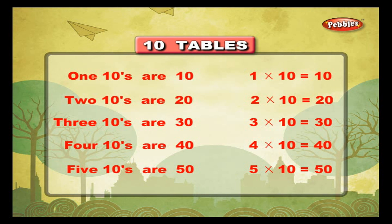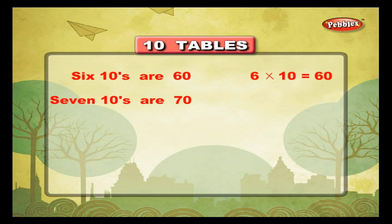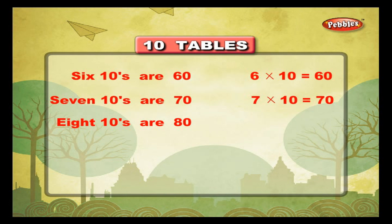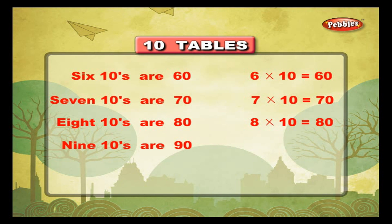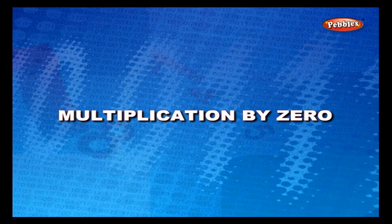6 tens are 60, 6 into 10 is equal to 60. 7 tens are 70, 7 into 10 is equal to 70. 8 tens are 80, 8 into 10 is equal to 80. 9 tens are 90, 9 into 10 is equal to 90. 10 tens are 100, 10 into 10 is equal to 100.